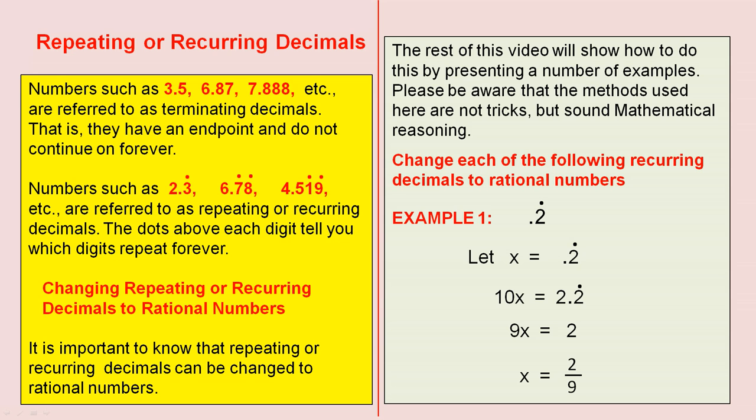Numbers such as 2.3 recurring, 6.78 where the 7 and the 8 are recurring, 4.519 where the 1 and the 9 are recurring, etc. are referred to as repeating or recurring decimals. The dots above each digit tell you which digits repeat forever.